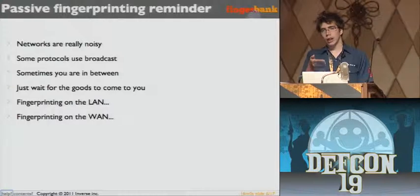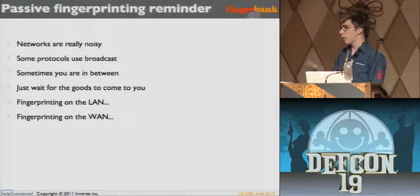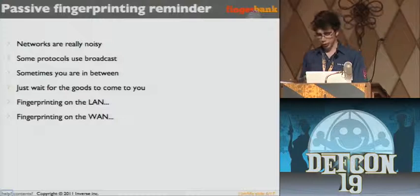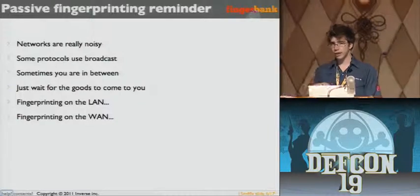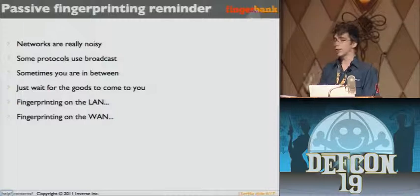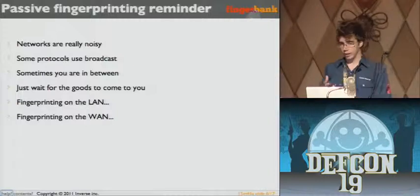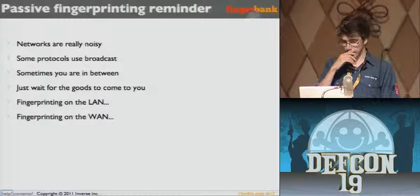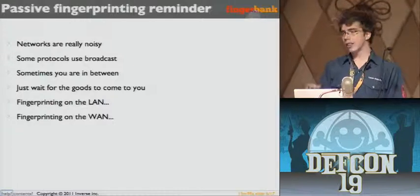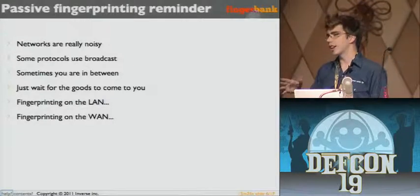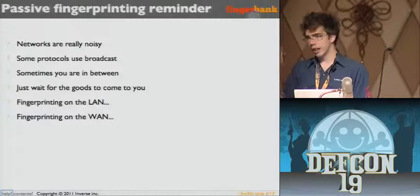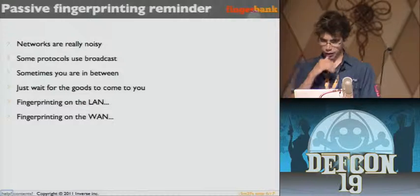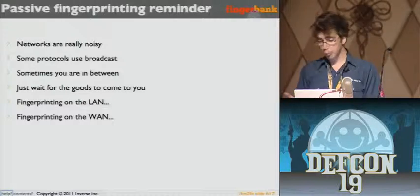On the LAN there is DHCP, which is a broadcast protocol that you can use for fingerprinting — I'll talk about that in the next slide. There is also multicast DNS, iTunes — all that stuff is very, very verbose and noisy, and it helps you a lot in identifying software or hardware. You could also do fingerprinting with a honeypot and see the internet noise passively.